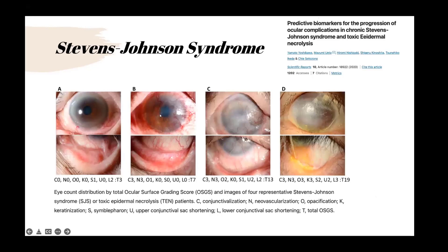Looking at SJS severity, from pictures A through D: initially the cornea can have minimal involvement, but as the disease progresses there can be extensive neovascularization and corneal opacification. In terms of lid anatomy, symblepharon can form — adhesions between the palpebral and bulbar conjunctiva extending into the corneal tissue — as well as shortening of the fornices, entropion, and trichiasis where the lids scrape against the corneal tissue causing epithelial defects. Scleral lenses can provide constant lubrication and reduce the mechanical shearing forces of the eyelids against the corneal tissue, preventing further damage.